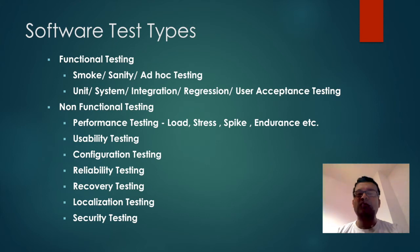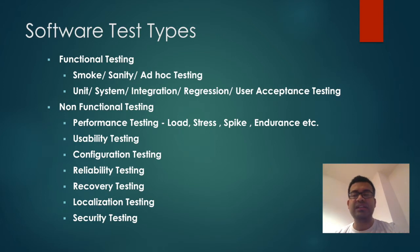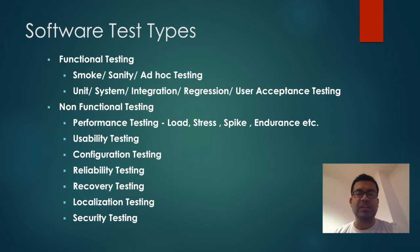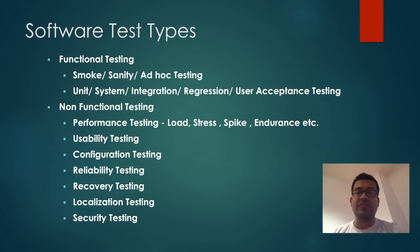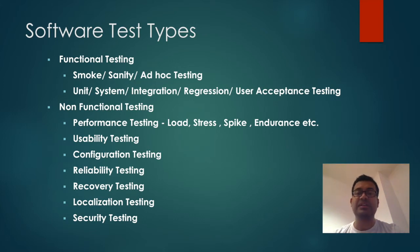Software test types can be categorized into two main types: functional testing and non-functional testing. Functional testing covers anything related to the functionality of the software. It can be done via smoke, sanity, or ad-hoc testing — unplanned testing where you check whether a build is working fine as soon as you receive it. All the testing levels we discussed — unit, system, integration, regression, and user acceptance testing — when related to functionality, are considered functional testing.